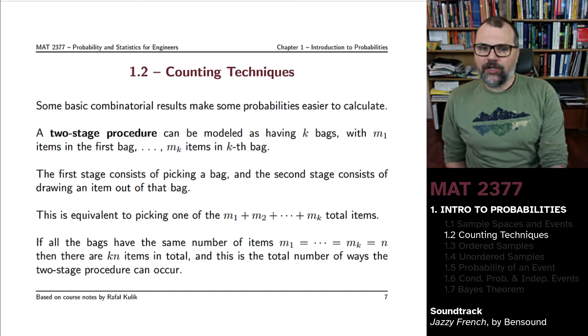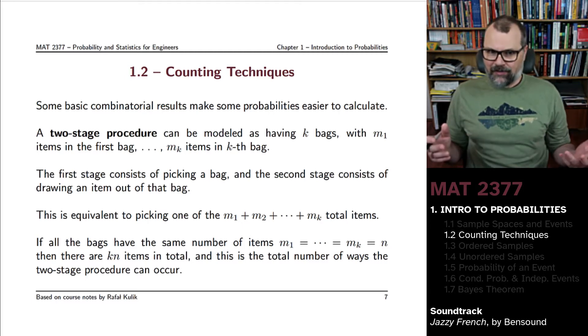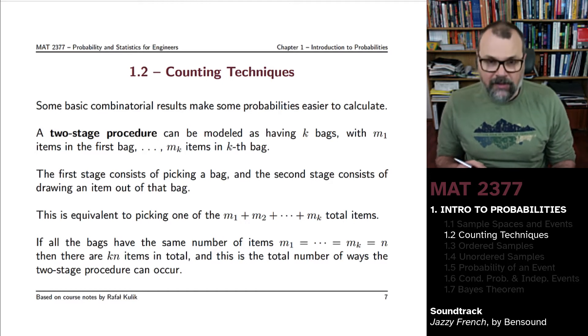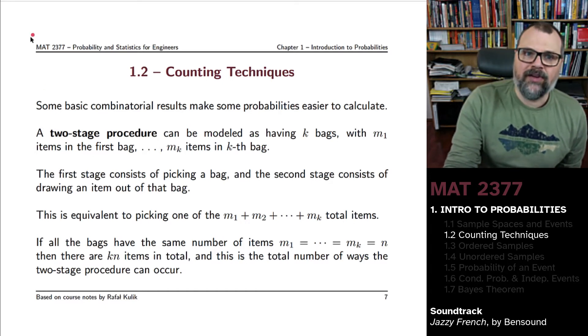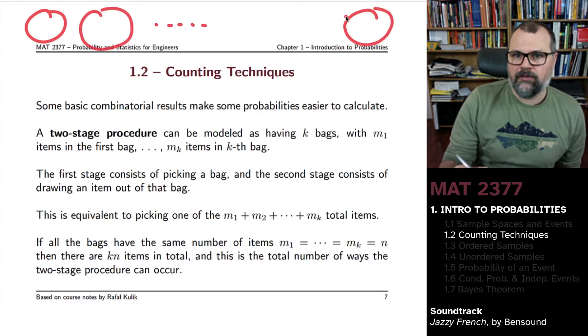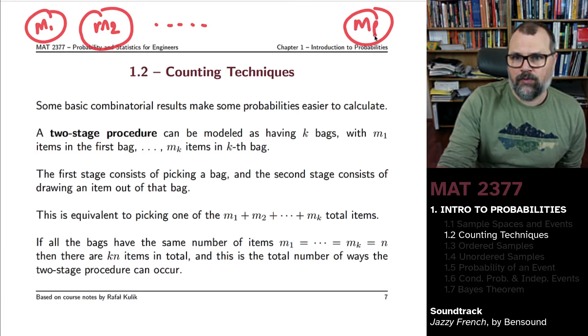A two-stage procedure, you can think of it as basically having K bags. And the first bag might have M1 items in it, and the second bag might have M2 items in it, and so forth until the final K-th bag. This would have M1 things, M2 objects, items. The last one would be Mk.